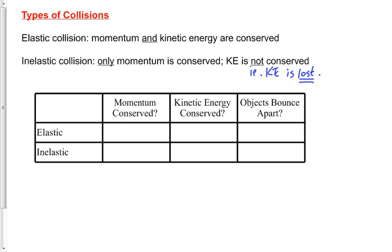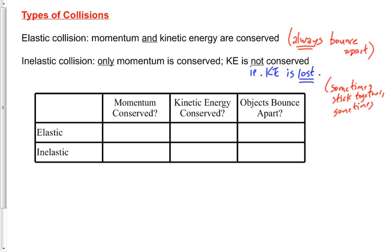There's one shortcut that will sometimes tell us: in an elastic collision, the objects always bounce apart. In an inelastic collision, they sometimes stick together and sometimes bounce apart. So if they bounce apart, you need to do the kinetic energy calculation to be sure. But if two objects stick together in a collision — like those car problems where they entangle — it must be inelastic.